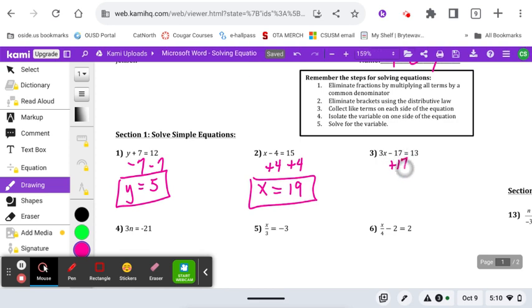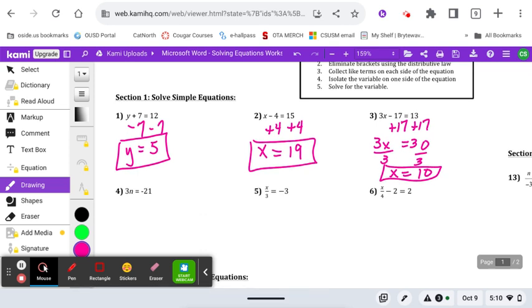Now it's getting into the two steps, where we first need to add, and then we need to divide. Next one's just a one-stepper, dividing by three.